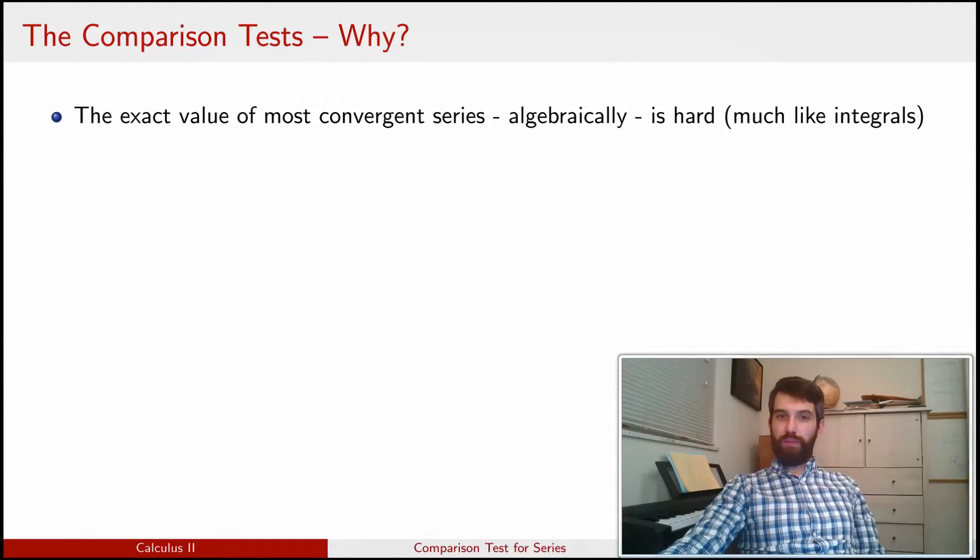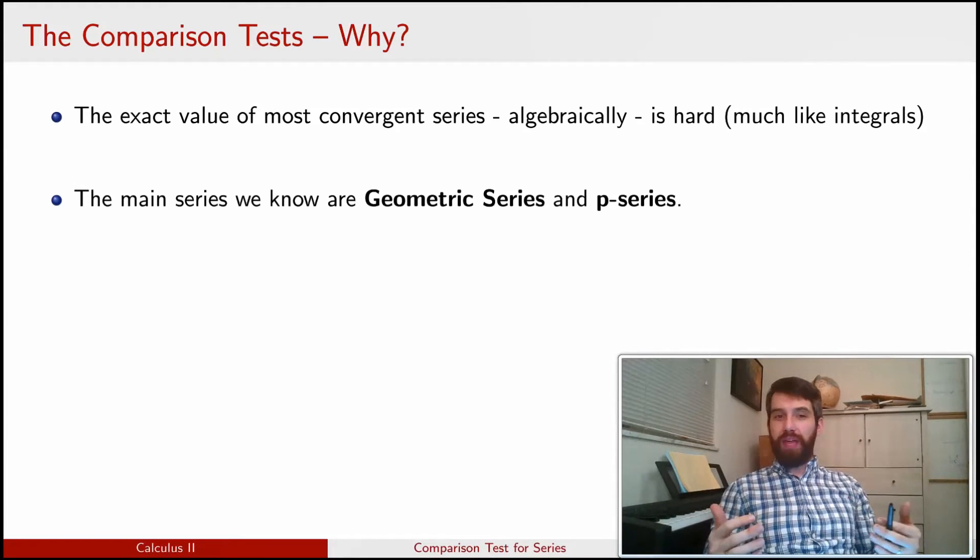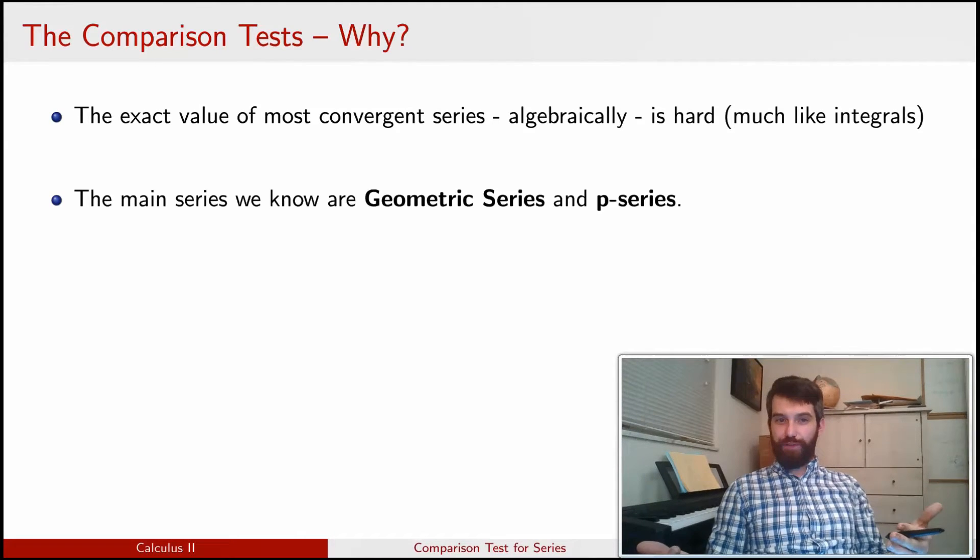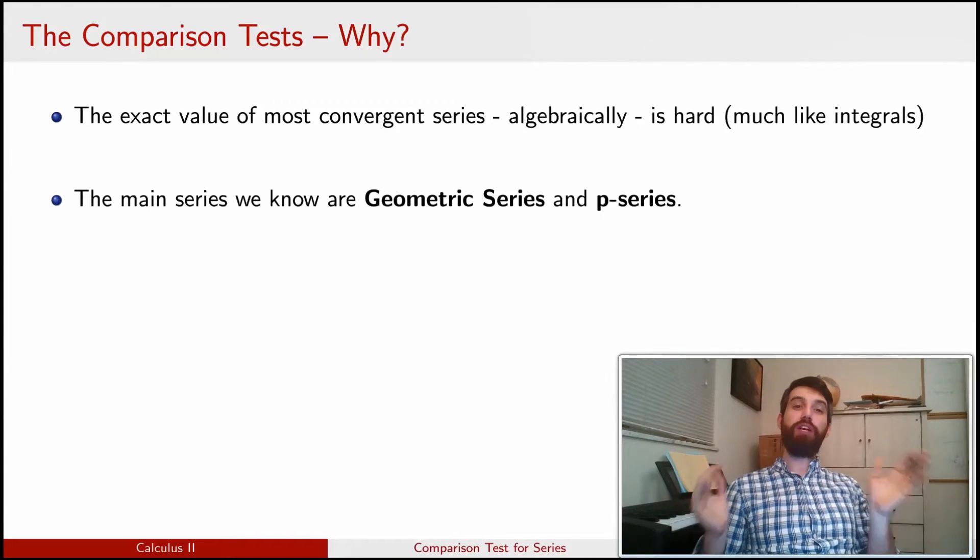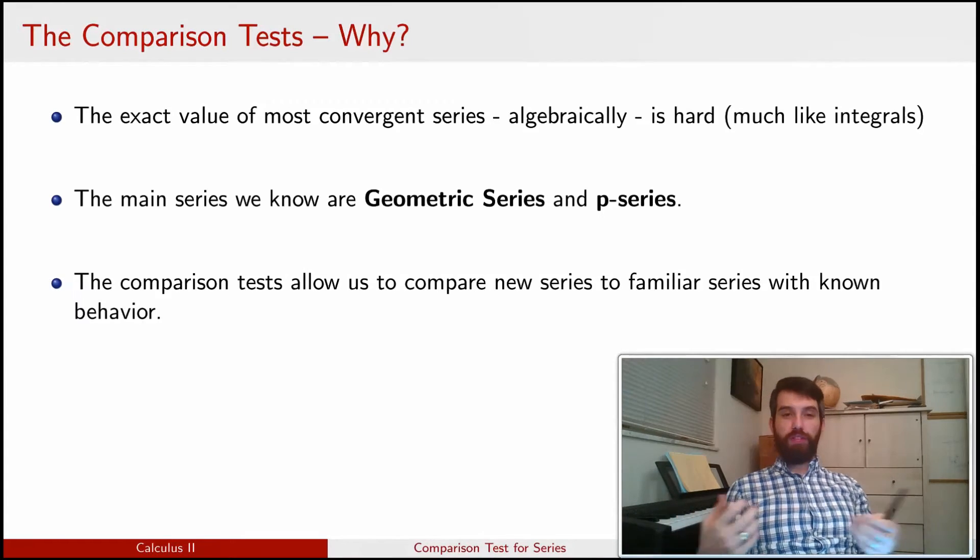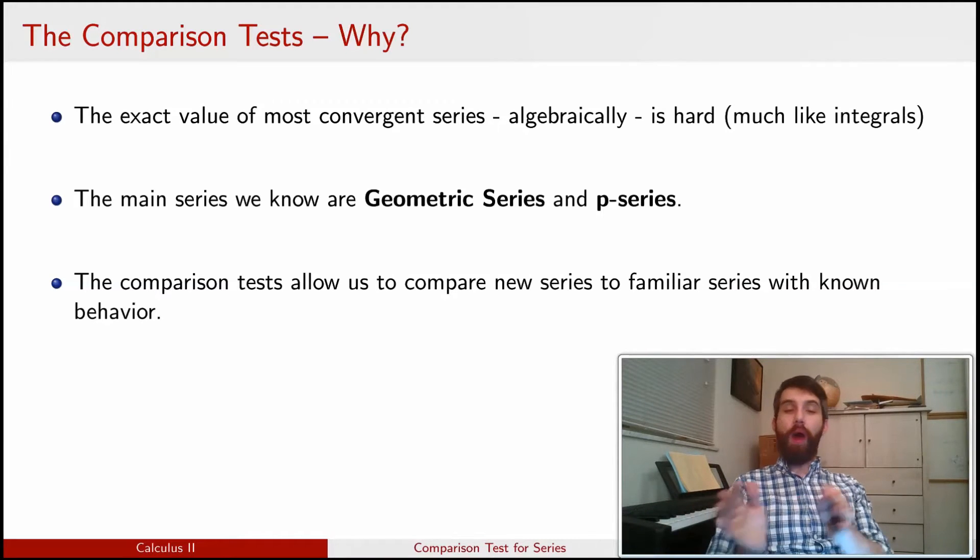Just as it was for improper integrals, for most series that we're faced with, we actually don't know what the value is. We have a couple that we do know. In particular, we're really familiar with geometric series and p-series. Geometric and p-series are the main ones where we have a really solid answer as to whether or not they converge or diverge. So instead of trying to compute the value of a series directly, because that's really hard, what we're going to do is compare the messy things that we're faced with with one of the series that we know the answers to.